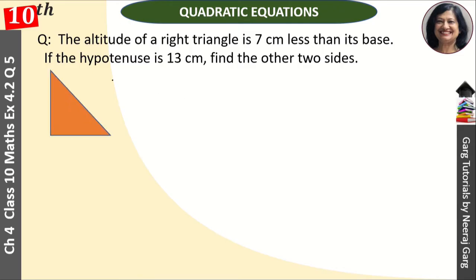So first we will make a triangle and we will say that the altitude of right triangle is 7 centimeter less than its base. We have labeled x centimeter, so the altitude is x minus 7 centimeter.